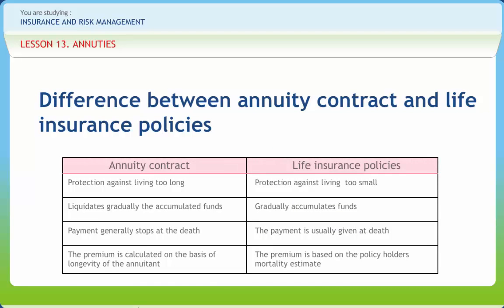There are some differences between life assurance and annuity contracts. Some people even call annuity the reverse application of the life insurance principle. Annuity is protection against living too long whereas the life insurance contract is protection against living too short. The annuity contract gradually liquidates accumulated funds whereas the life insurance contract gradually accumulates funds. Payment generally stops at death in the case of annuity contracts, whereas in life insurance the payment is usually given at death. The premium in an annuity contract is calculated on the basis of the longevity of the annuitant, whereas in life insurance the premium is based on the policyholder's mortality estimate. Both contracts complete the economic program of an individual and are complementary to each other.